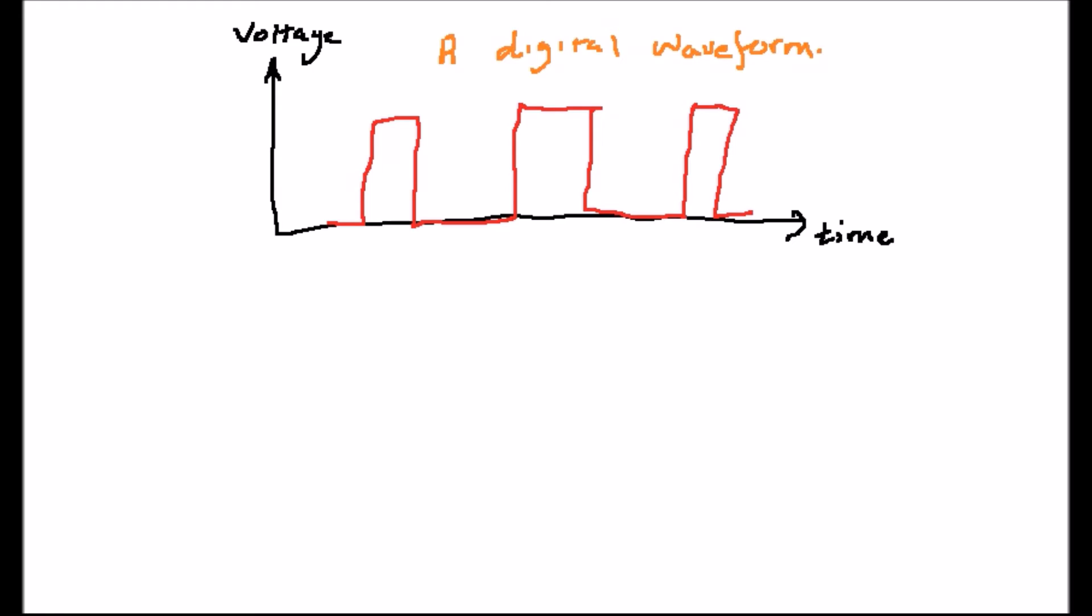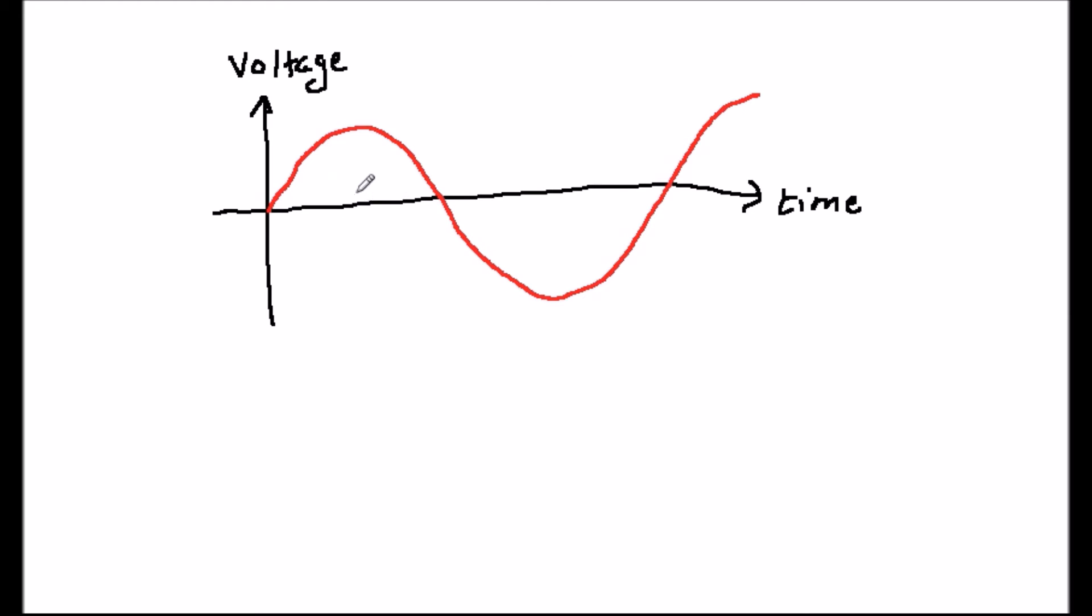I'd like now to consider some of the important parameters which we use to describe signals and to do this I'll use a sine wave as an example as shown in the diagram below. The highest value above zero which the signal attains is called the peak value or amplitude. As an example the peak value of the UK mains supply is 324 volts.